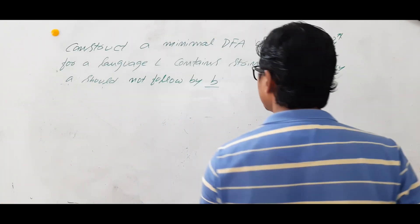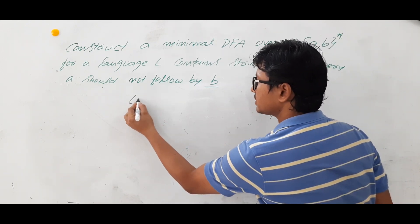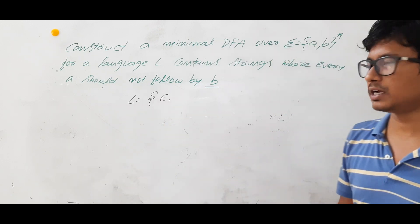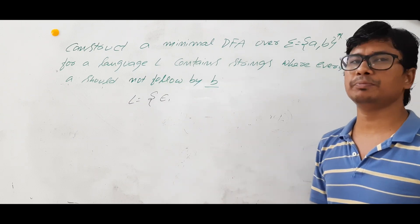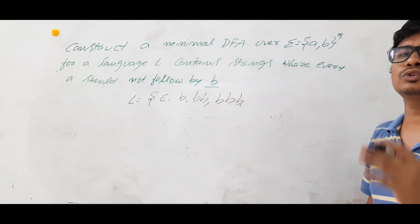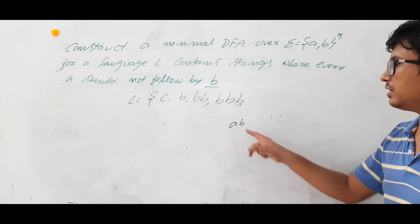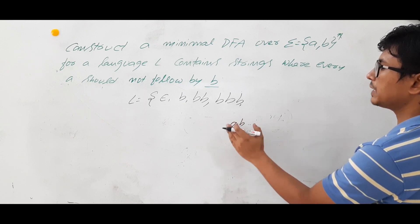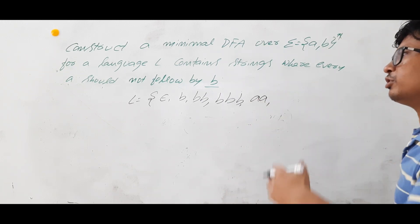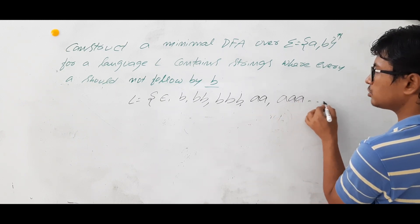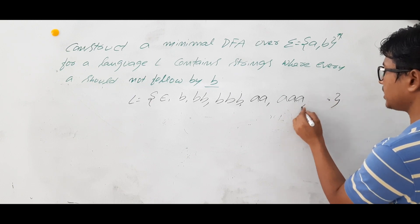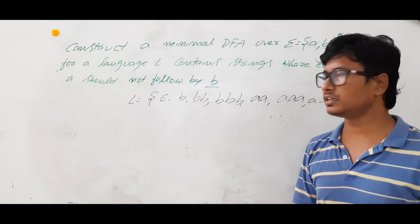So if A should not be followed by B, what strings does language L consist of? Epsilon can come because if A is not there, B obviously will not follow. There are no restrictions on the number of Bs. The only restriction is that if A comes, you should not get a B after it. Strings like AB are not allowed. Any number of As are allowed — even a single A should be accepted. So this is an infinite language.